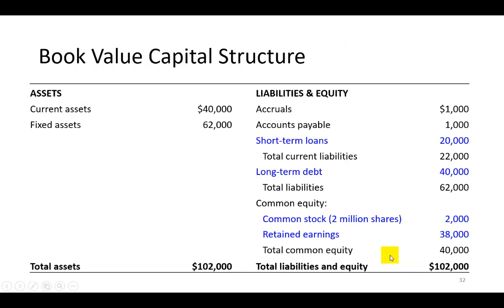Using book value, we calculate what's called the book value capital structure. We go to the balance sheet and identify the investor-supplied capital. An investor is someone who puts money into a project, or in this case a firm, with the expectation to receive a return on that investment. If you lend money to a firm in the form of short-term debt, you're going to get paid interest, so you're an investor.